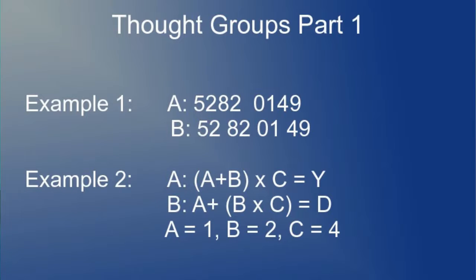Now when we substitute numbers for the letters — A is 1, B is 1, and C is 4 — you will see that the answer Y in A is 12, but in B the answer D is 9. So the use of pause and low pitch has a direct result on the answer, and this is all reflected in the listener's understanding.